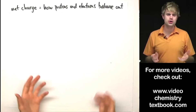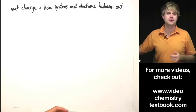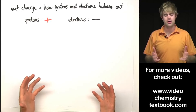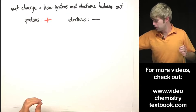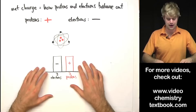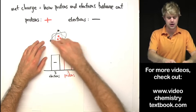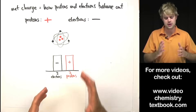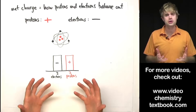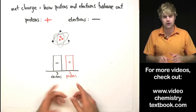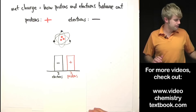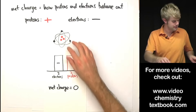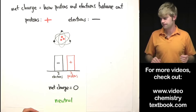Net charge is about how protons and electrons balance each other out. Protons have a positive charge and electrons have a negative charge. So if we have the same number of protons and electrons in an atom — like three protons and three electrons here — they're going to balance each other out. The three negative charges balance the three positive charges, so we end up with an atom that has a net charge of zero, and we call this atom neutral, meaning it has no net charge.